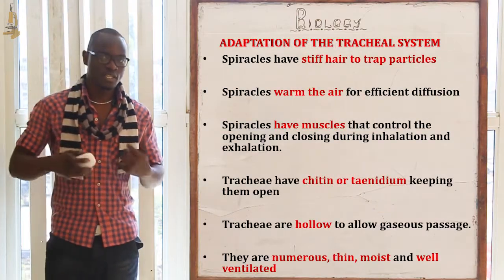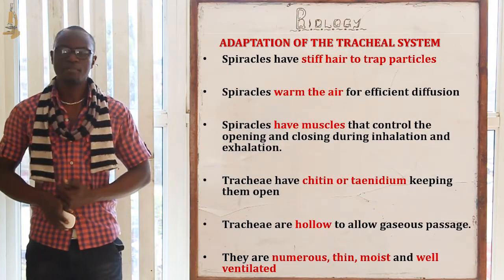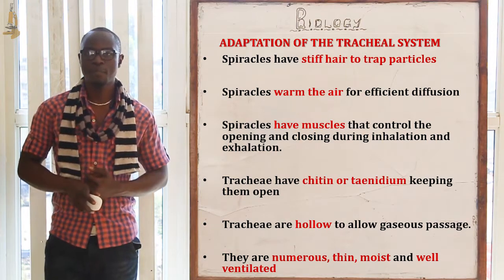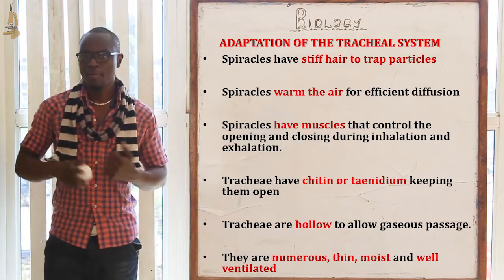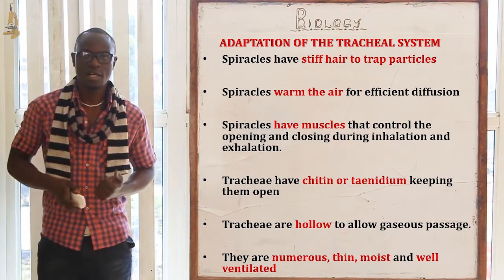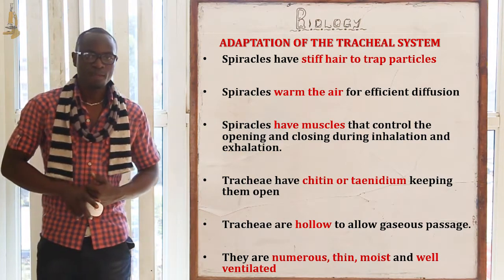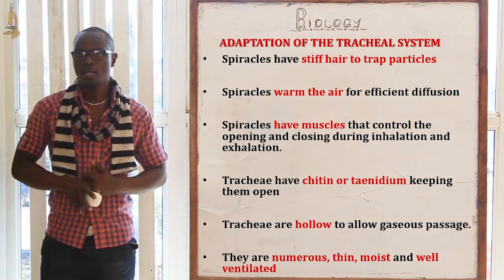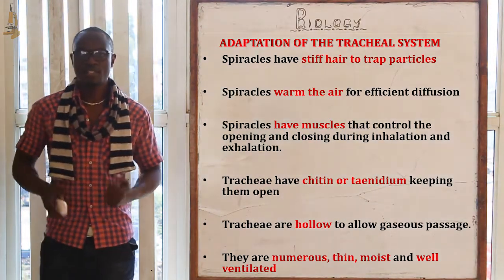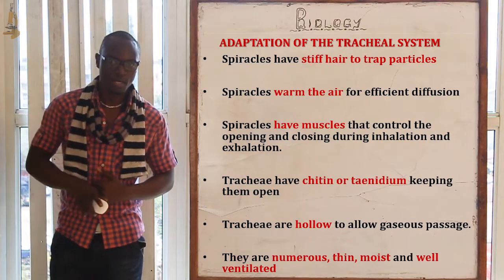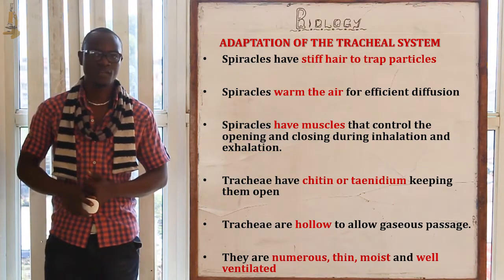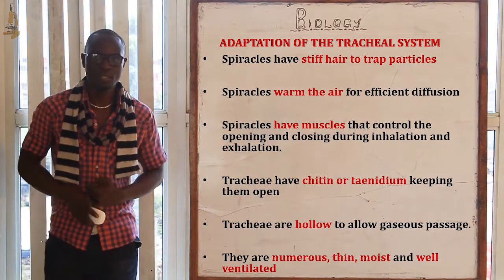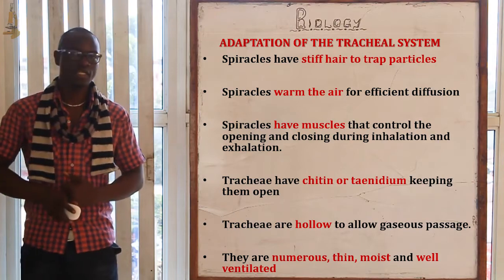The adaptations of the tracheal system for gas exchange include: spiracles having stiff hairs to trap air particles and a mechanism for warming the air for easier diffusion. The trachea have a chitin structure that keeps them open and prevents collapsing. The trachea are hollow for easier gas passage. The respiratory surface must also have numerous blood vessels, be thin, be moist, and be well ventilated.